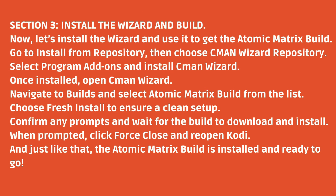Section 3: Install the Wizard and Build. Now let's install the wizard and use it to get the Atomic Matrix build. Go to Install from Repository, then choose Cman Wizard Repository. Select Program Add-ons and install Cman Wizard. Once installed, open Cman Wizard. Navigate to Builds and select Atomic Matrix Build from the list. Choose Fresh Install to ensure a clean setup, and confirm any prompts while waiting for the build to download and install.